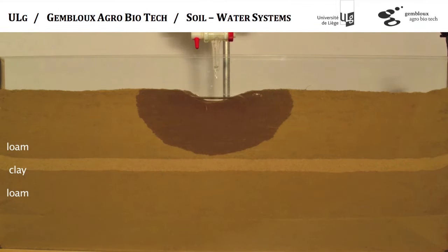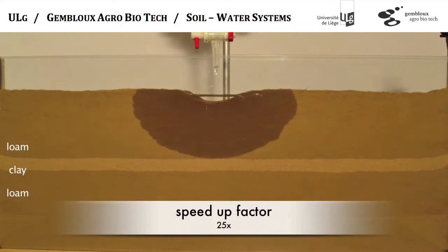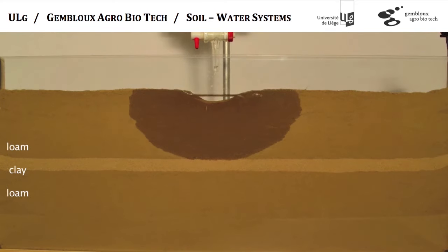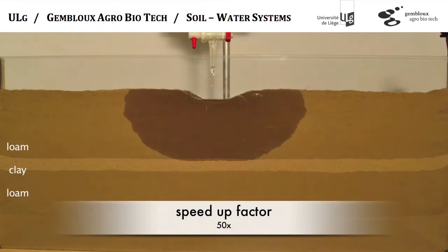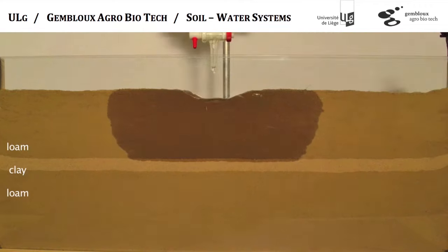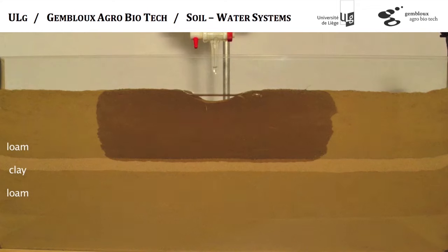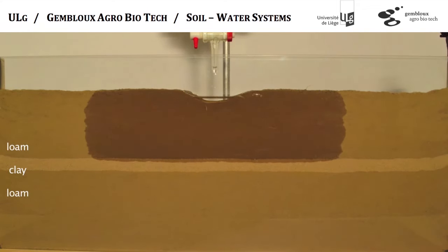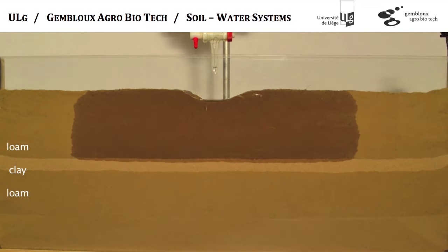Despite the fact that a clay pan hinders downward movement of water, it does absorb water readily as the soil above is wetted. Observe the wetting front as it moves into the clay pan — the pores in the clay are much finer than those in the overlying soil, so they can pull water from the soil. Water tables are not built up over clay pans because of an inability of water to enter them; instead, water tables result from the slow transmission of water. The resistance to flow in these extremely fine pores is so great that even over weeks and months, little water is transmitted through them.